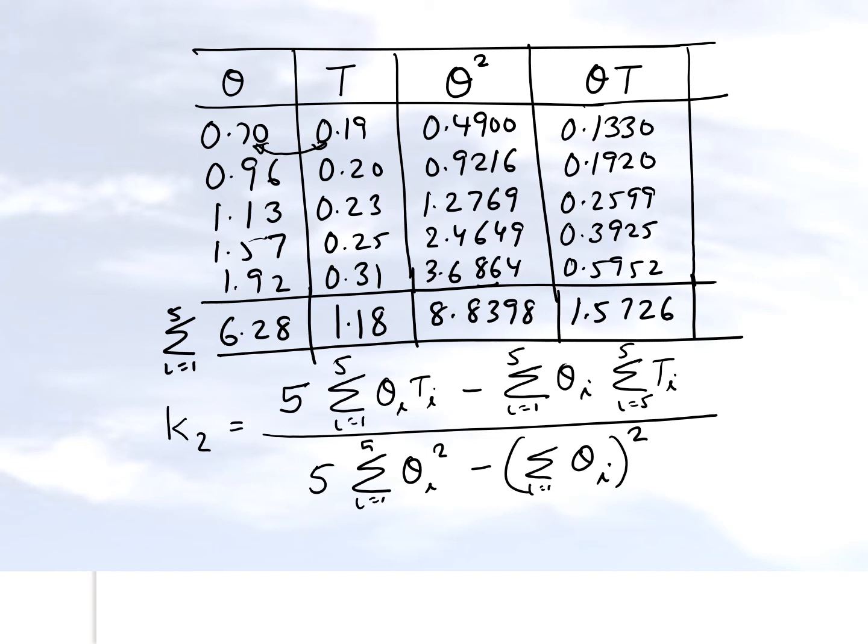We can now substitute the values which we just found out. So it's five. Summation of theta i t sub i is right here. That's 1.5726. The summation of theta i is right here. The summation of t sub i is right here. And that's divided by five.